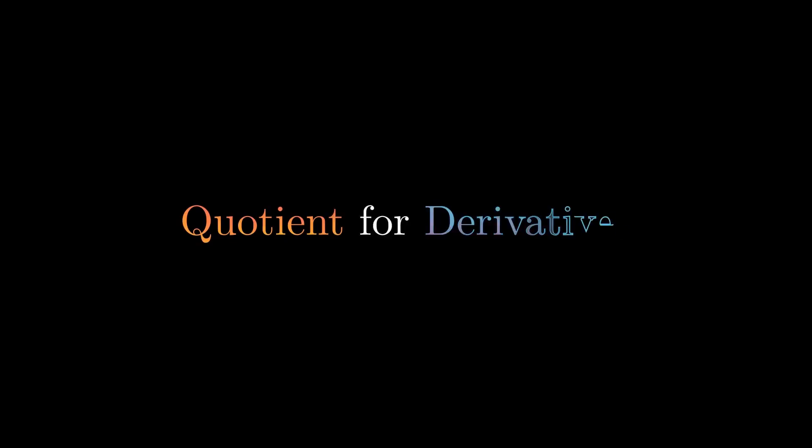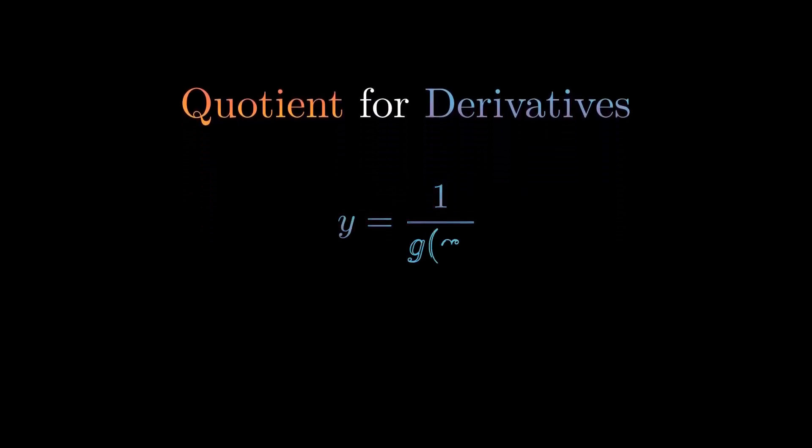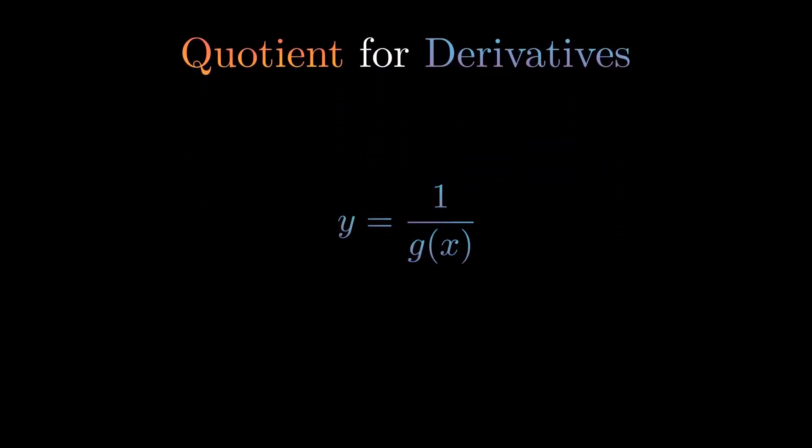Moving on to the quotient rule, we will need to use the chain rule. First we need to be able to differentiate the reciprocal of a function. To begin, we rewrite it in terms of exponents so we can utilize the power rule, where the derivative of x^n is n times x^(n-1). I didn't want to prove this because it takes some work to write up and code it. For now, just accept it as a fact. If you really want to, you can search up the proof on your own.